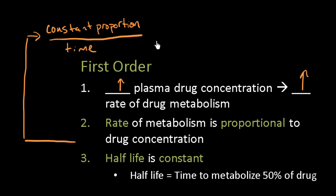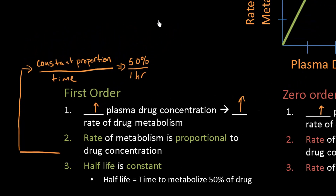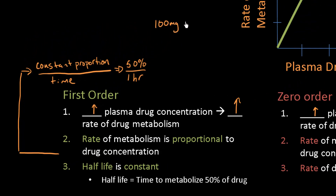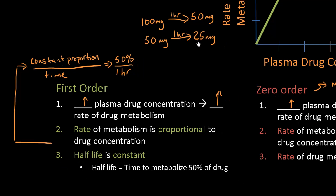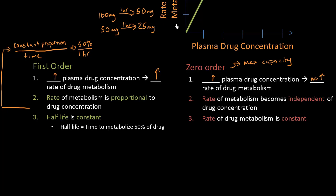If the half-life is 1 hour, 50% of the drug will be metabolized every hour. It doesn't matter how much drug you have in your body. If I have 100 mg of drug and 1 hour goes by, a constant proportion will be metabolized — I'll have 50 mg left. If I have 50 mg and another hour goes by, I'll have 25 mg left. The rate of drug metabolism is proportional to the plasma drug concentration.